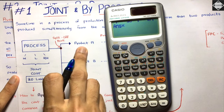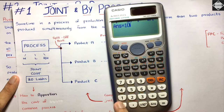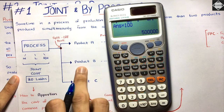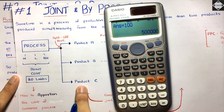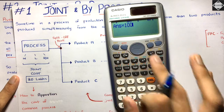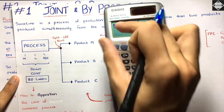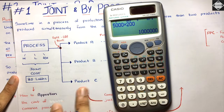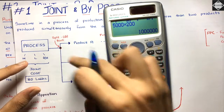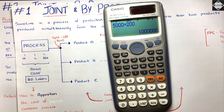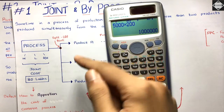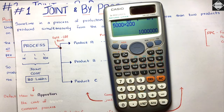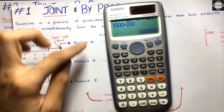With 20 lakhs divided by 400, we get 5,000 as our cost per unit. Multiply this with each product's units: Product A has 100 units, so 100 × 5,000 = 5 lakh. Product B also has 100 units, so 5 lakh. Product C has 200 units, so 200 × 5,000 = 10 lakh. The joint cost of 20 lakhs has been apportioned across the three products.